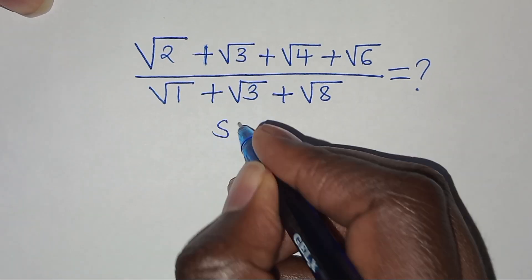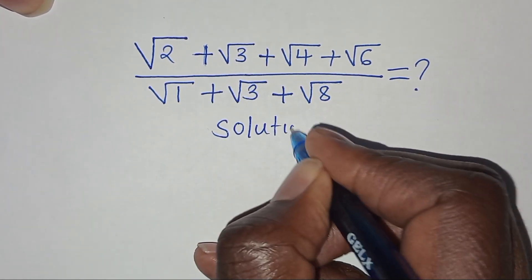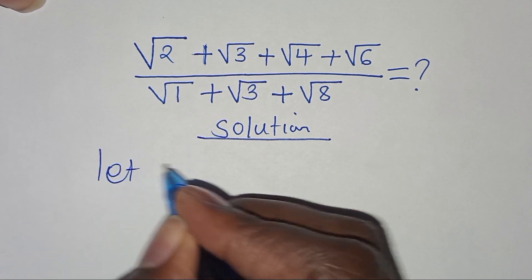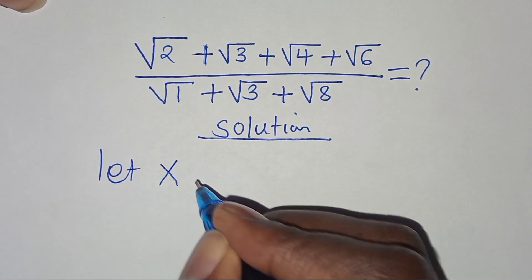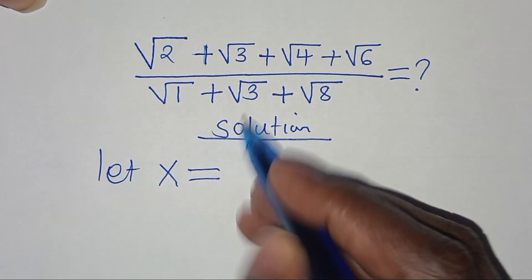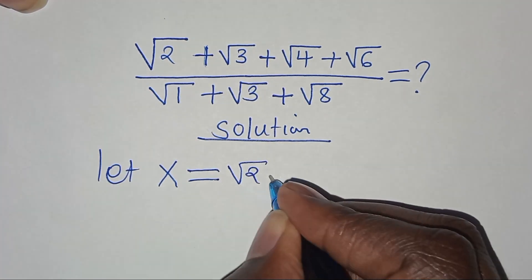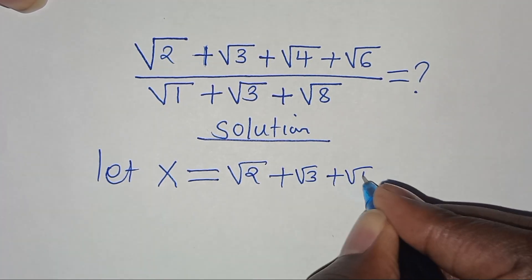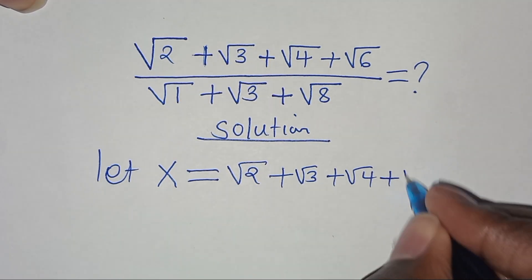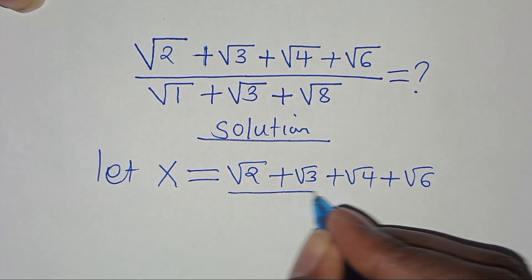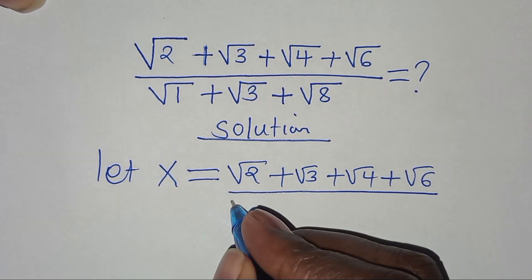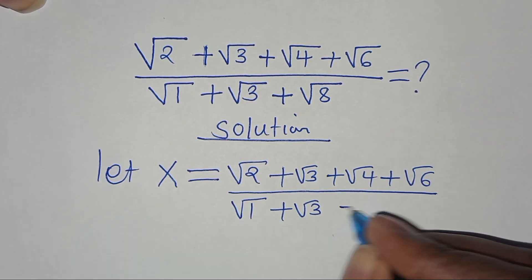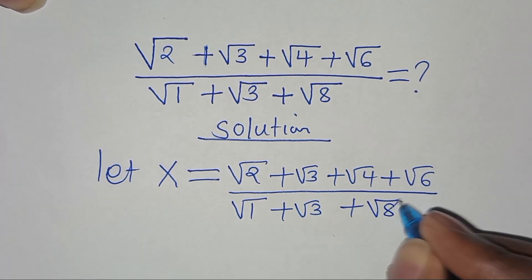So, from here, let x be equal to the square root of 2 plus square root of 3 plus square root of 4 plus square root of 6, everything divided by square root of 1 plus square root of 3 plus square root of 8.